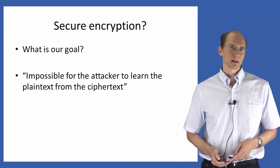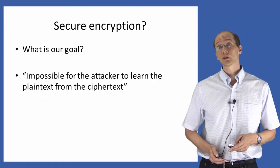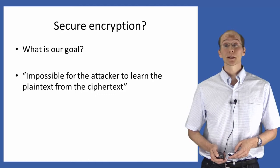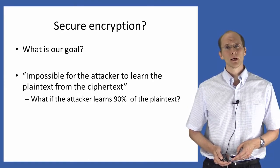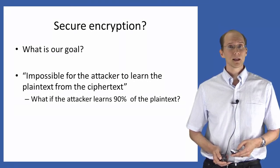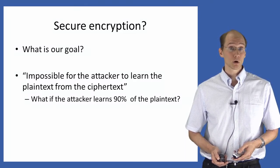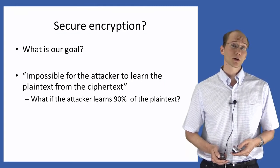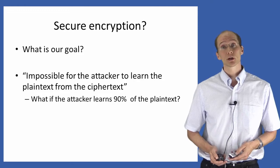How about this possibility: say an encryption scheme is secure if and only if it is impossible for the attacker to learn the plaintext? This is better, but still has problems. What if I come up with a scheme in which the attacker cannot learn the entire plaintext, but is able to learn 90% of the plaintext? Such a scheme would be considered secure by this definition, but hopefully you would agree that we don't really want to consider such a scheme secure. This means we have to keep looking for the right definition.